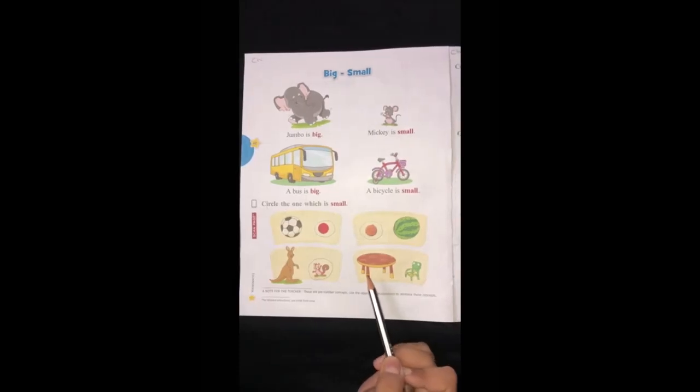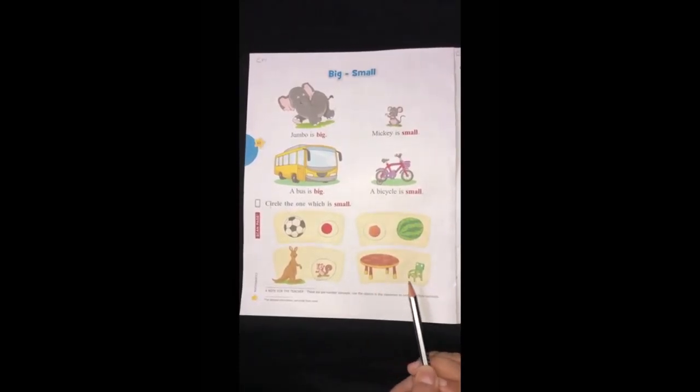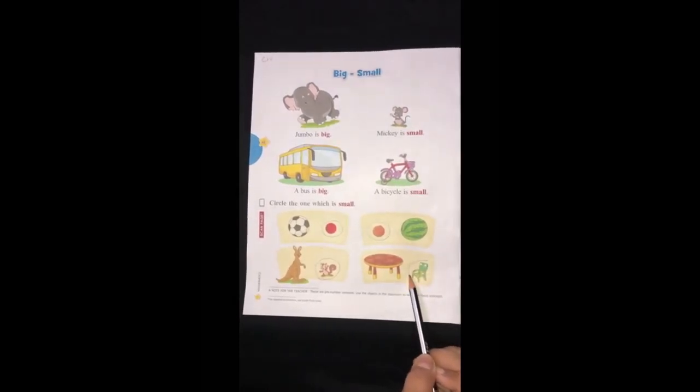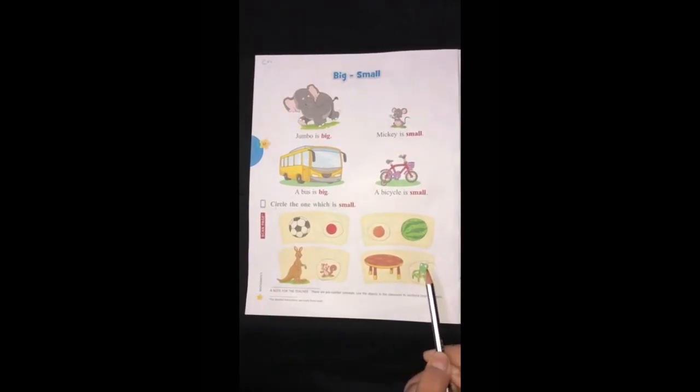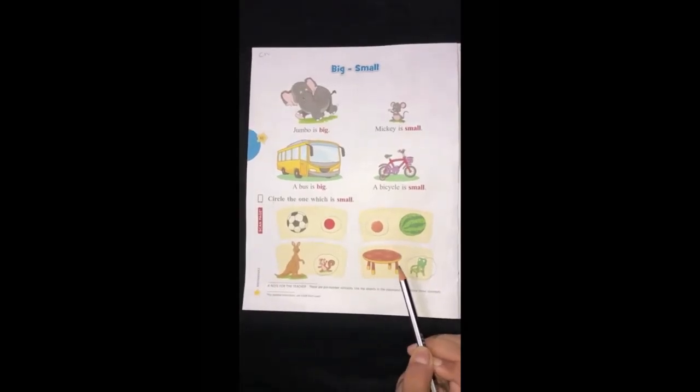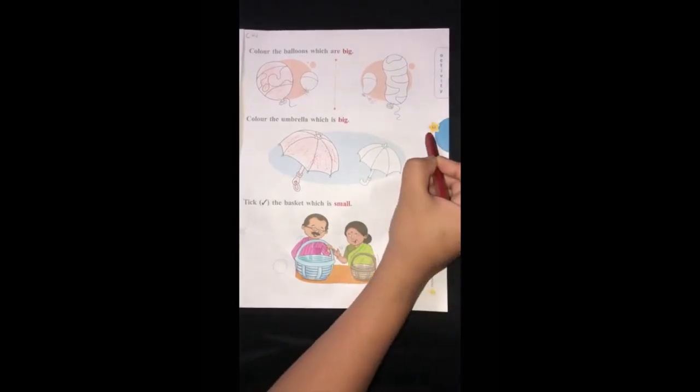Next picture is of a table and a chair. So you have to circle the small object. The chair is small in size. So let's circle the chair. Very good, my dear children. Like this, you have to do this activity in your Pearl Book Semester 1. Now, over to page number 63.